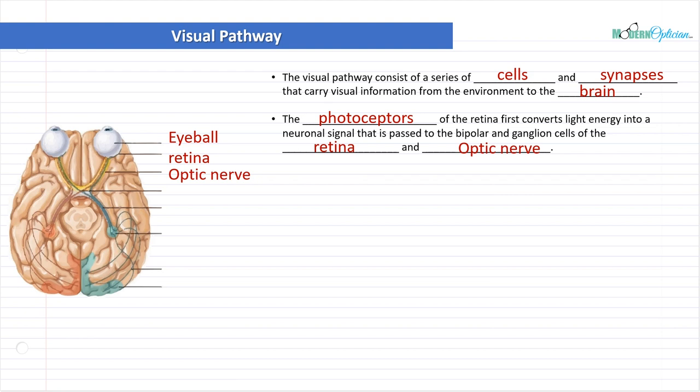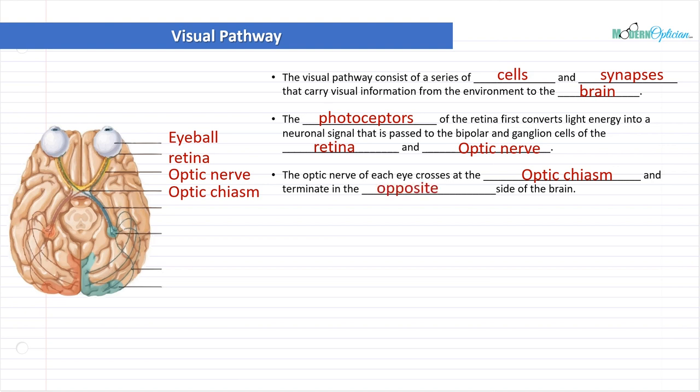Now, the photoreceptors of the retina first converts light energy into neuronal signals that is passed to the bipolar and ganglion cells of the retina and the optic nerve. We've already talked about this stuff. So this should be kind of review, right? So we know that the photoreceptors of the retina, how the ganglion cells of the retina and the optic nerve are kind of shared and they pass information from each other and they change from electrical to chemical signals, all this stuff we've covered already. Now, the optic nerve of each eye crosses, and then that cross takes place at the optic chiasm, and it terminates in the opposite side of the brain.